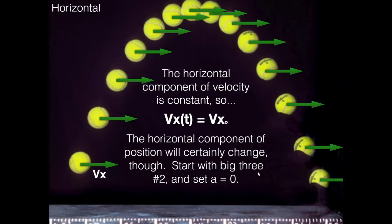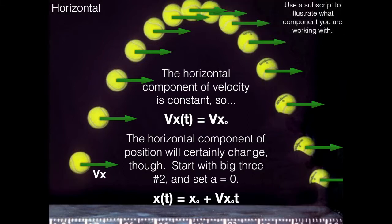Now, how do we get the horizontal position equation? We start with the big three equation number two — the one with time squared — and set the acceleration equal to zero. That gives us x(t) = x₀ + vx₀·t. So the initial horizontal velocity appears here just as before. These are the two horizontal equations — the first is really just a statement that horizontal velocity is constant.